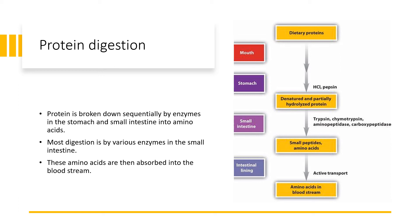The protein is also digested. Protein is broken down sequentially by enzymes in the stomach and the small intestine into amino acids. Most digestion takes place in the small intestine by various enzymes. Once the protein is completely broken down into amino acids, these amino acids are then absorbed into the bloodstream.